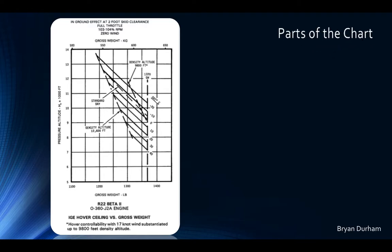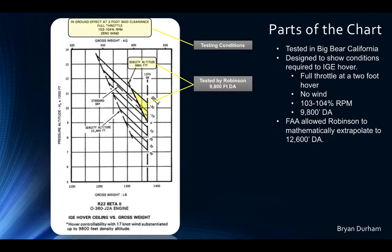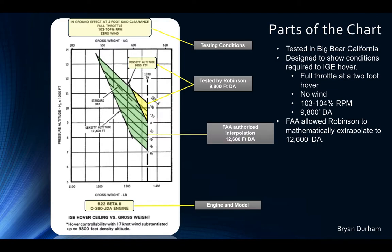The testing conditions were: Big Bear, California; full throttle; two-foot hover; zero wind; max RPM at 104%; up to 9,800-foot density altitude. The yellow portion of the chart shows the conditions under which the aircraft was originally tested.